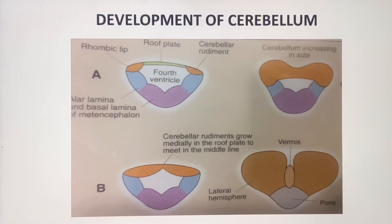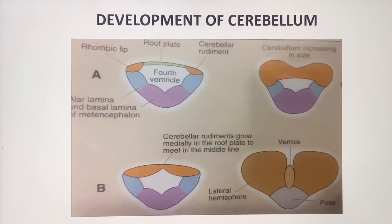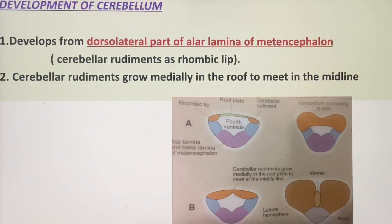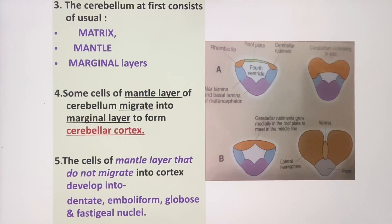Now coming to the development of the cerebellum. A portion of the metencephalon called the rhombic lip will form the cerebellum. The cerebellum develops from the dorsolateral part of the alar lamina of the metencephalon, and this cerebellar rudiment is known as the rhombic lip. The cerebellar rudiments grow medially in the roof to meet in the midline.